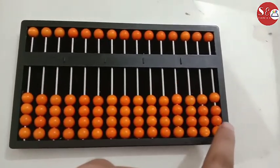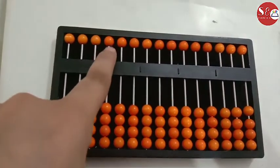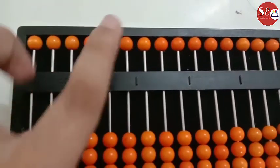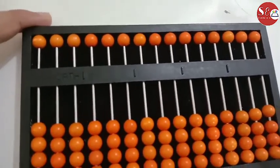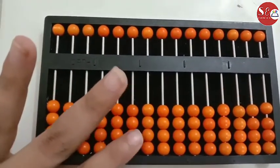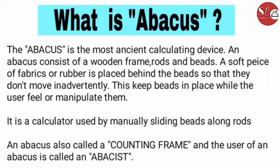Abacus is a frame with vertical rods. The beads on the rods are stable. If you can see, I'm going to bend the Abacus — our Abacus is not bending, so our Abacus is stable. It is a calculator used by manually sliding beads along rods. An Abacus is also called a counting frame, and the person who uses an Abacus we call an Abacist.